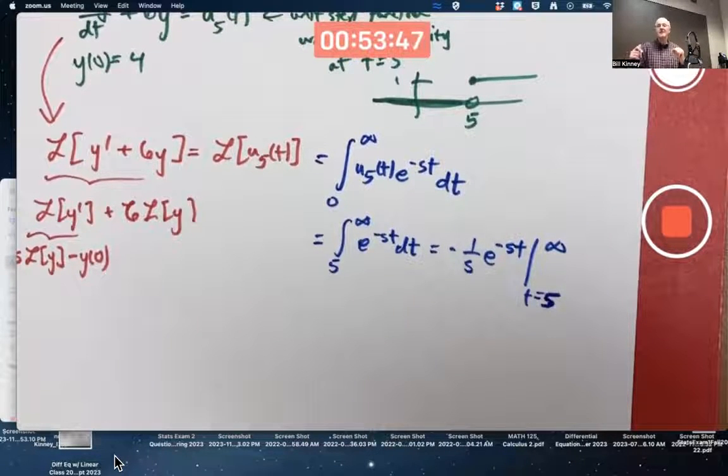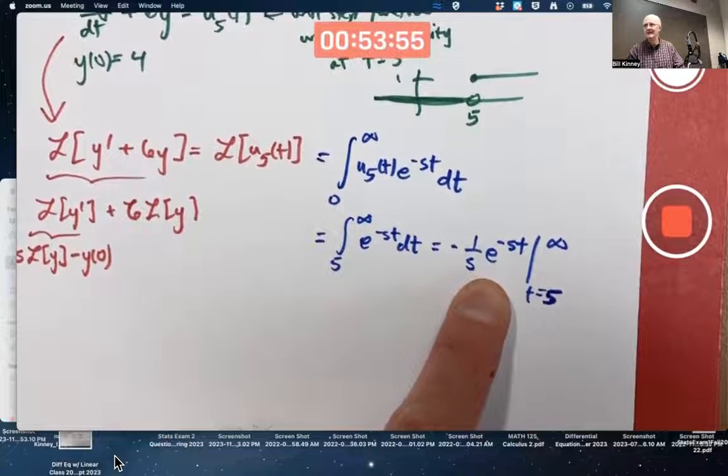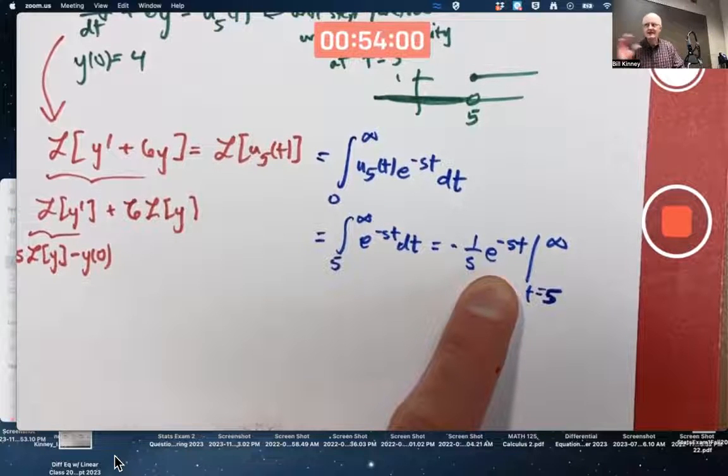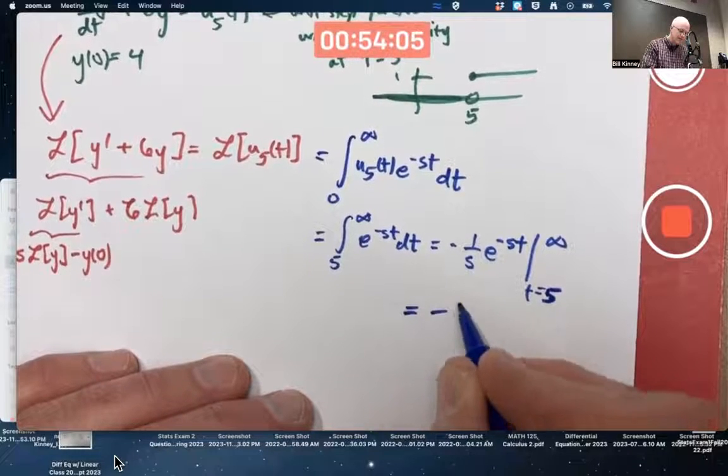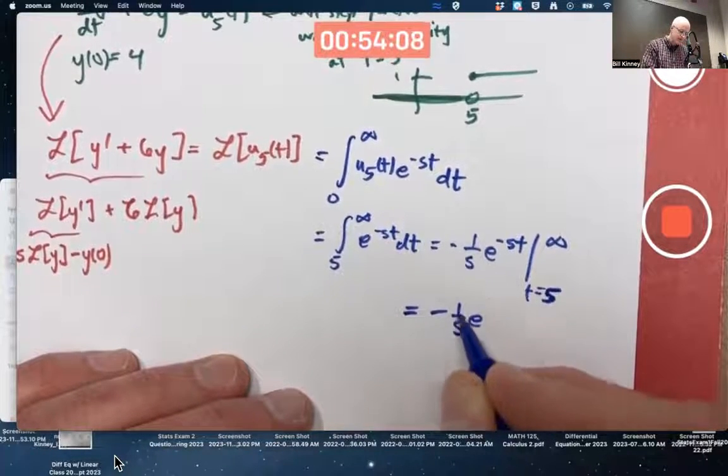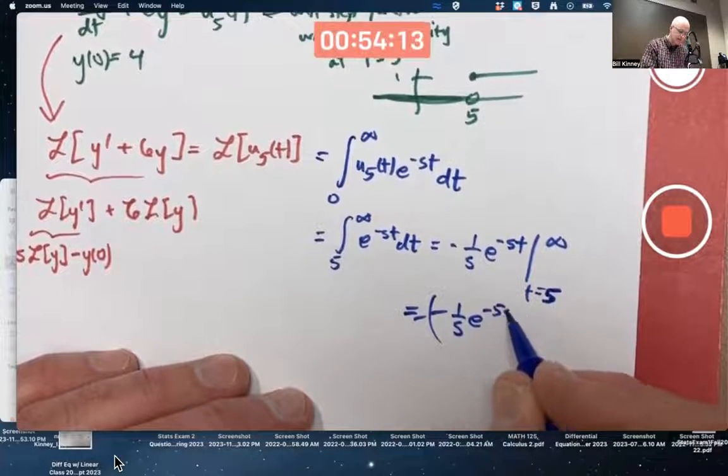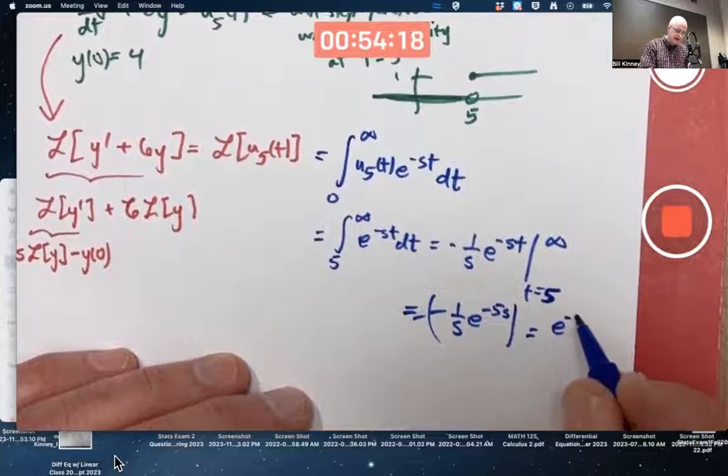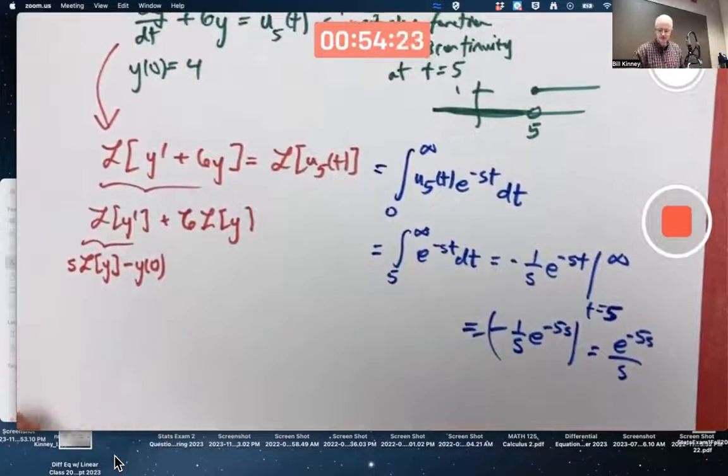Plug in infinity, so to speak. Really, it's a limit. If s is positive, you're going to get 0, right? For t, plug in t equals infinity, so to speak, times a negative. It's like a negative infinity. e to the negative infinity is like 0. Really, it's limits, but we're not worried about it. Subtract what you get when you plug in t equals 5. The two negative signs cancel, giving you a positive sign. e to the negative 5s over s is the Laplace transform of u5 of t.